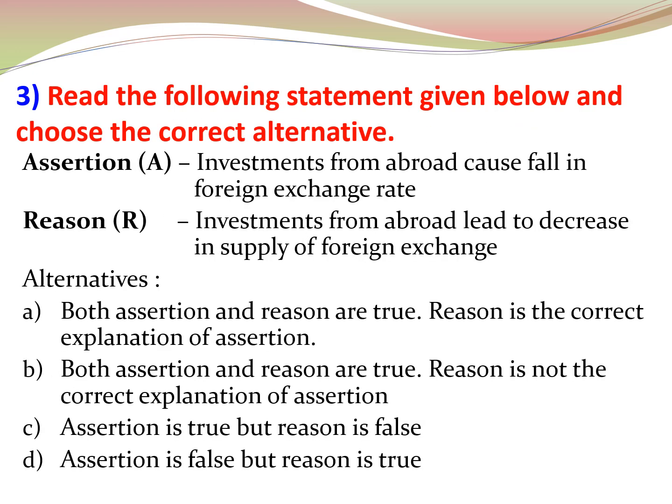Question 3: Read the following statements and choose the correct alternative. Assertion: investments from abroad cause a fall in the foreign exchange rate. Reason: investments from abroad lead to a decrease in supply of foreign exchange. The correct answer is option C — assertion is true but reason is false. Investments from abroad actually lead to an increase in supply of foreign exchange, and therefore lead to a fall in foreign exchange rate.